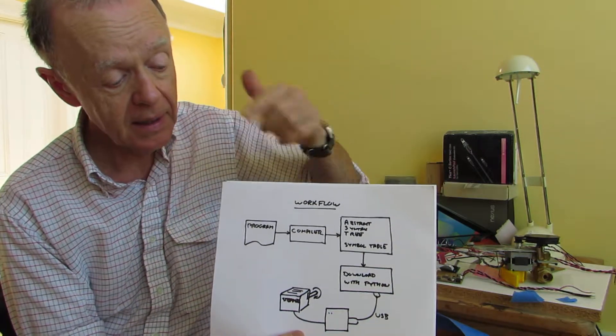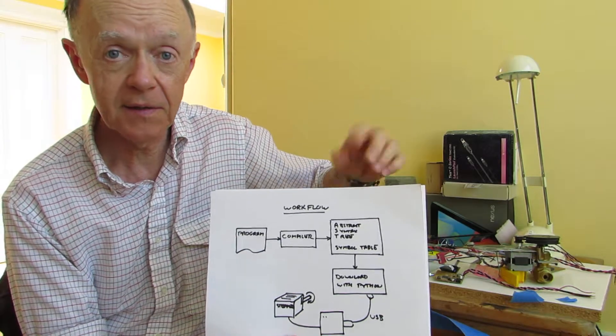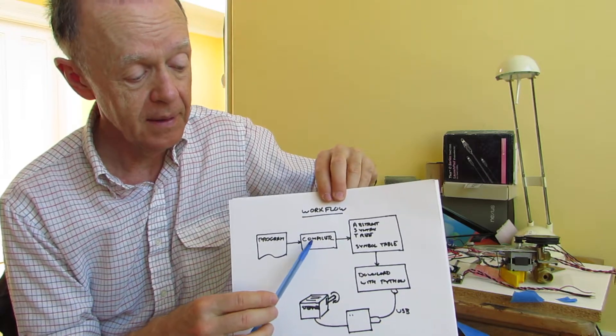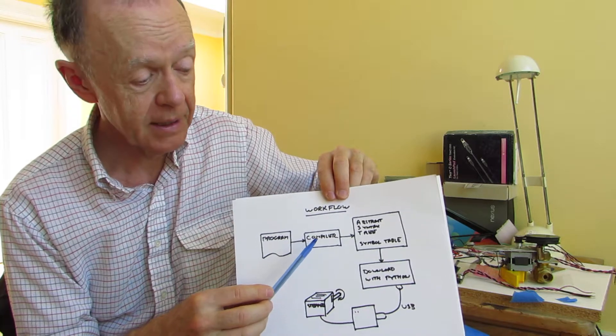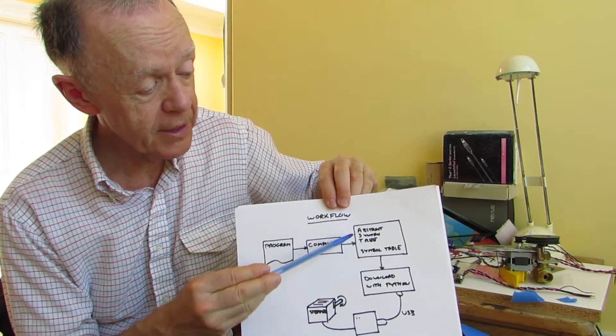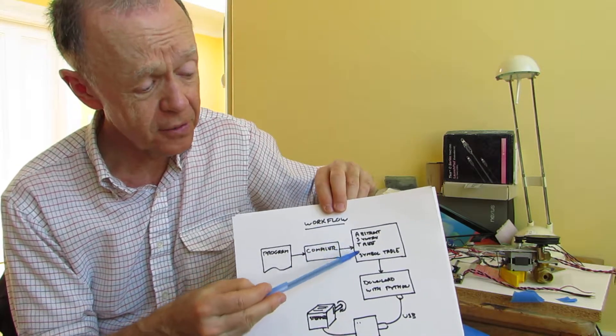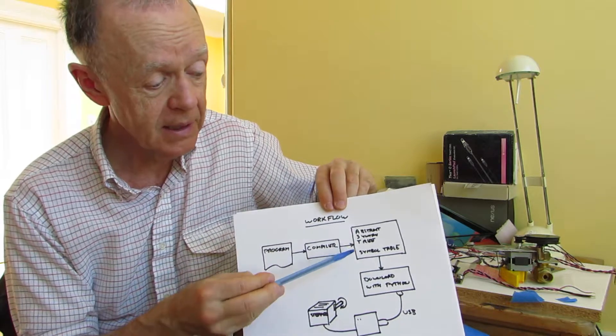Flex was actually originally developed as Lex, and Eric Schmidt, who's one of the people at Google, actually ended up writing that back in 1975, I think. The compiler generates an abstract syntax tree and a symbol table. You don't really need to know these details, but there are two files that can be inspected.